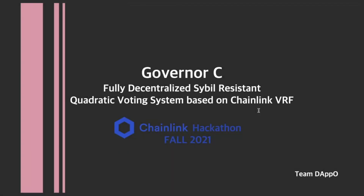Hi, this is Ellen Park, a member of Team Pill. In this project, our team developed a smart contract named Governor C. This is a fully decentralized sybil-resistant quadratic voting system based on Chainlink VRF.